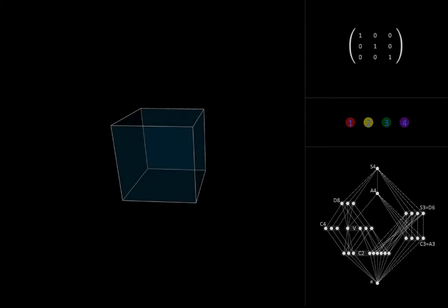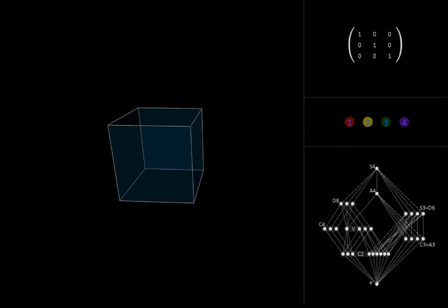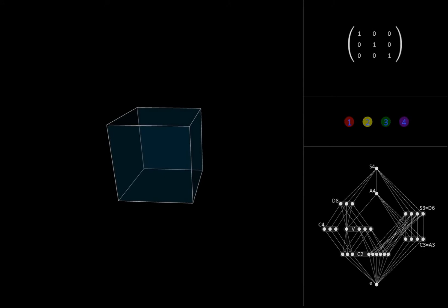To see why this is indeed the case, we could try to find a set of 4 geometric features of the cube that get permuted as we apply its various symmetry transformations. Ideally, we'd like every permutation of these features to be possible and to correspond to a unique symmetry transformation.